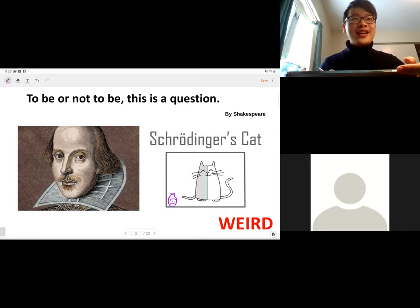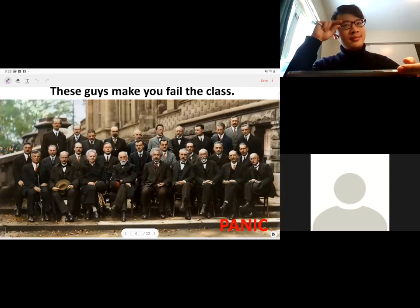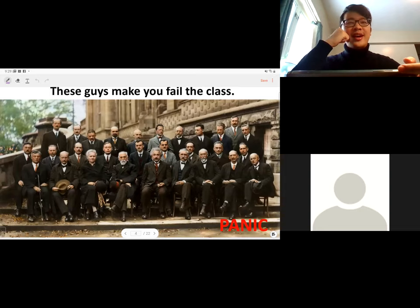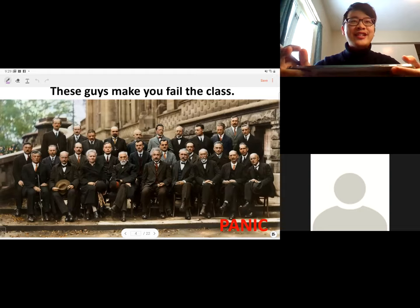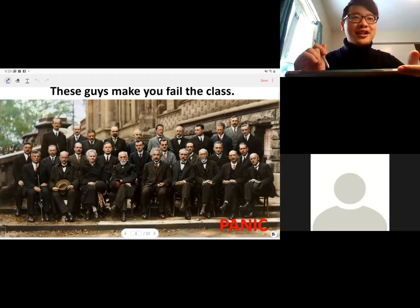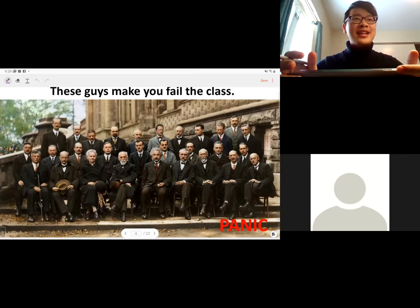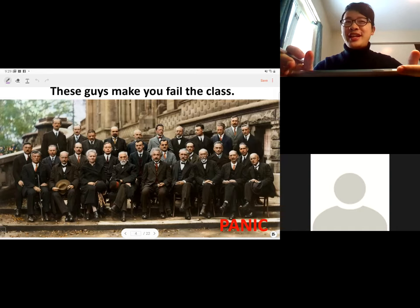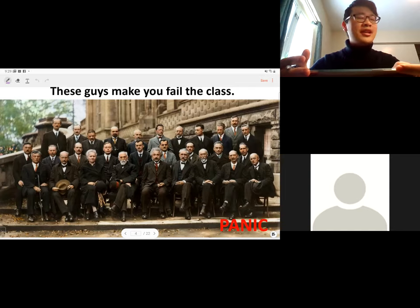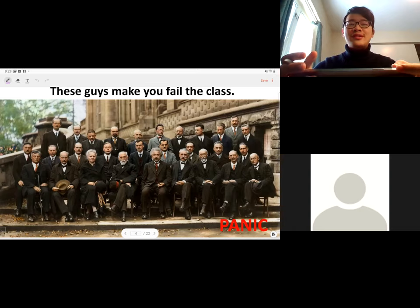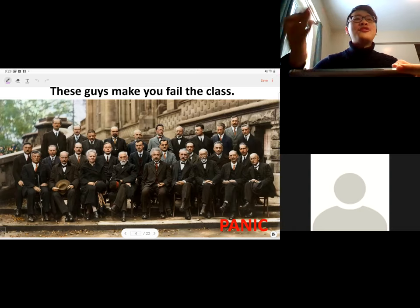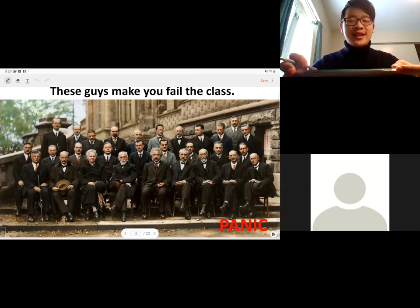The third critique about physics is too difficult. These guys make you feel the class. There is a group of people. They get together and have a meeting talking about the physics and they write their theory into the textbook and ask everybody to learn. Then if you cannot pass the exam, you failed. Learning physics panics. So that's why many people get away from the physics. But why do we still need to learn physics? If you are engineering students, this is a trivial question. But I think if you have not decided what major you're going to learn, it's very important to know the importance of physics.